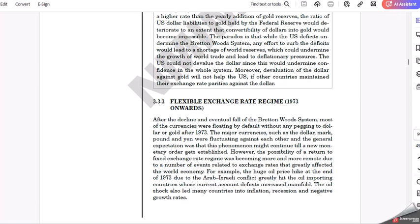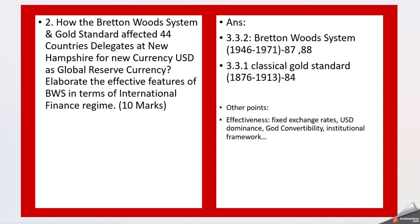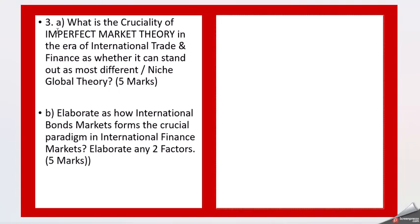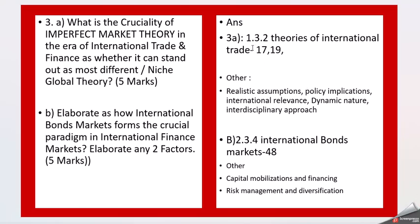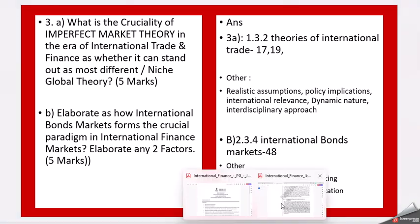For question three: what is the cruciality of the imperfect market theory in the era of international trade and finance, and whether it can stand out as the most different or niche global theory? Also elaborate how the international bond market forms a crucial paradigm in international finance — elaborate any two factors. For this question, move to chapter 1, theories of international trade, page number 17 and 19.